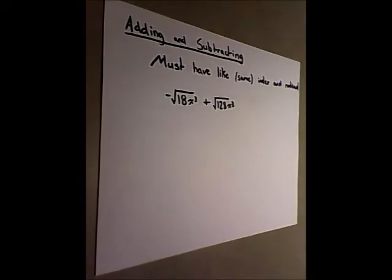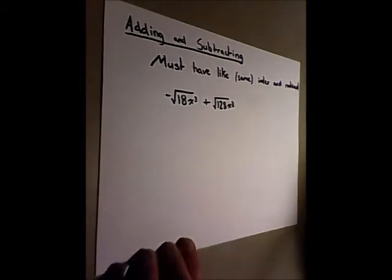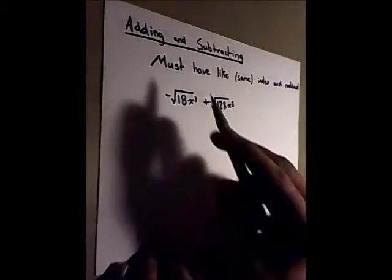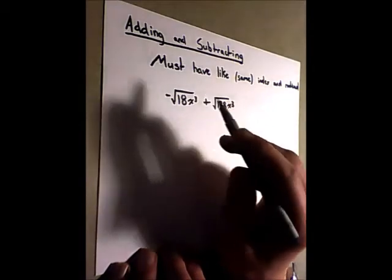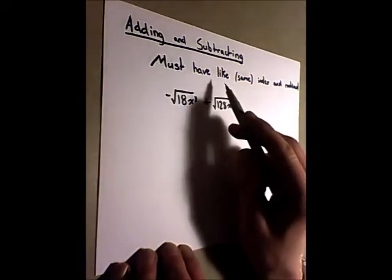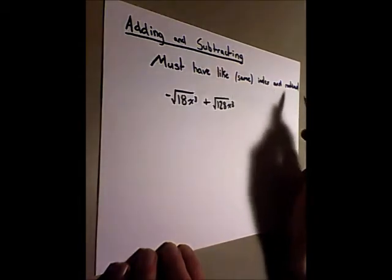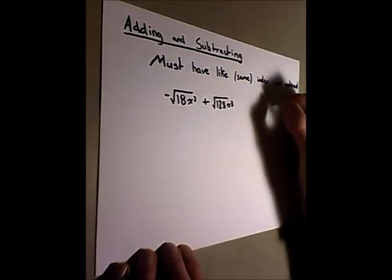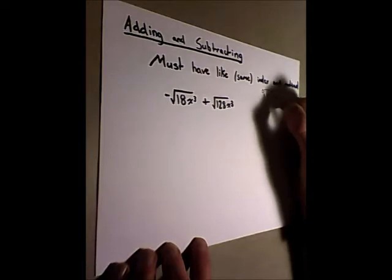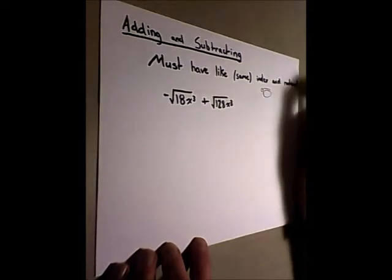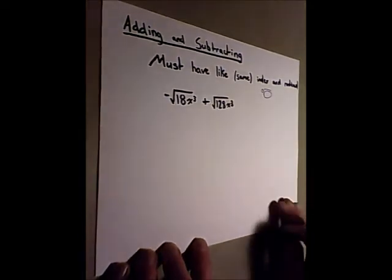The first thing we look at in chapter 5 is adding and subtracting radicals. It's important that the radicals are like radicals and that they have a like or the same index and radicand. And just to recap, this part of the radical is the index and this part of the radical underneath the sign is the actual radicand itself.